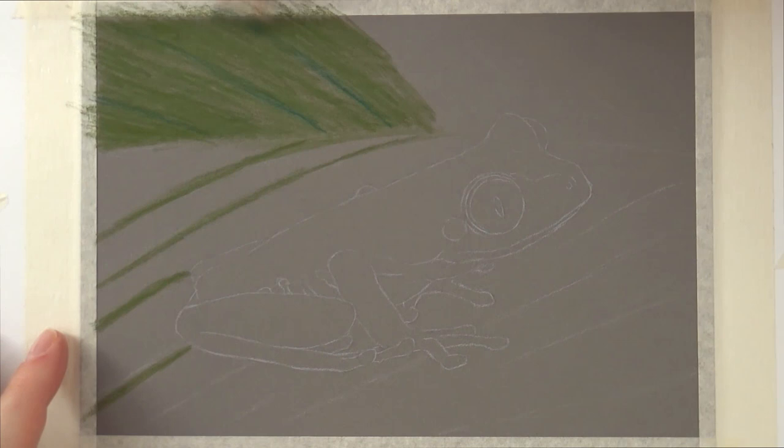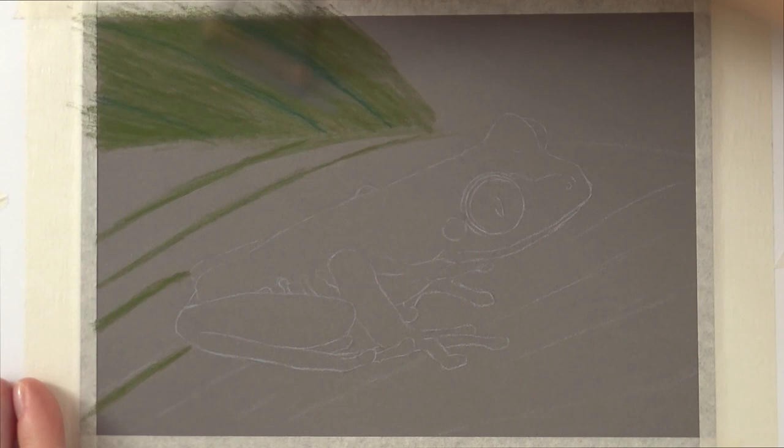So he's sitting on the leaf. The frog itself is super vibrant, super bright. And then the leaf is a bit more muted. So I have exaggerated that a little bit in the drawing. I made the leaf even more muted and the frog more brighter.